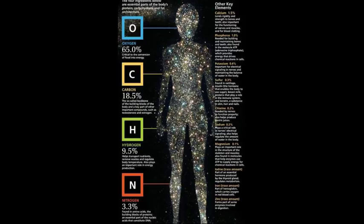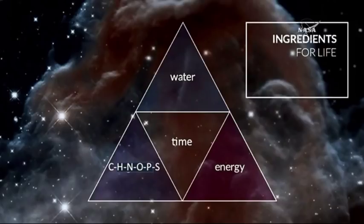Number two in the universe is helium, but it's chemically inert — can't use it. Next in the universe is oxygen, and it's the next most abundant element in life on earth. That oxygen and hydrogen come together as water, and you also find hydrogen and oxygen in other molecules, but we're mostly water by weight. Next is carbon — we're carbon-based life — and carbon is next in order in life, just as it is next in order in the universe. So these ingredients for life on earth are everywhere, and the recipe for this is actually the universe itself.